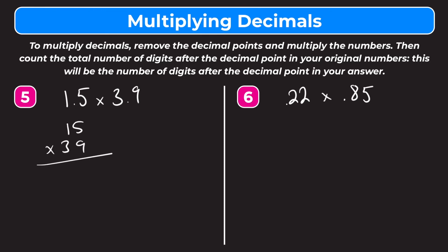9 times 5 is 45, carry the 4. 9 times 1 is 9, plus 4 is 13. Moving one place over to the left with 3, so we put a 0 here. 3 times 5 is 15, put the 1 up here. 3 times 1 is 3, plus 1 is 4. Adding down: 5 plus 0 is 5, 3 plus 5 is 8, 4 plus 1 is 5.